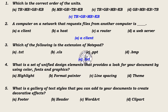4. What is a set of unified design elements that provides a look for your document by using color, fonts, and graphics? Options: Highlight, Format Painter, Line Spacing, Theme. Answer: Theme. 5. What is a gallery of text styles that you can add to your documents to create decoration effects? Options: Footer, Header, Word Art, Clip Art. Answer: Word Art.